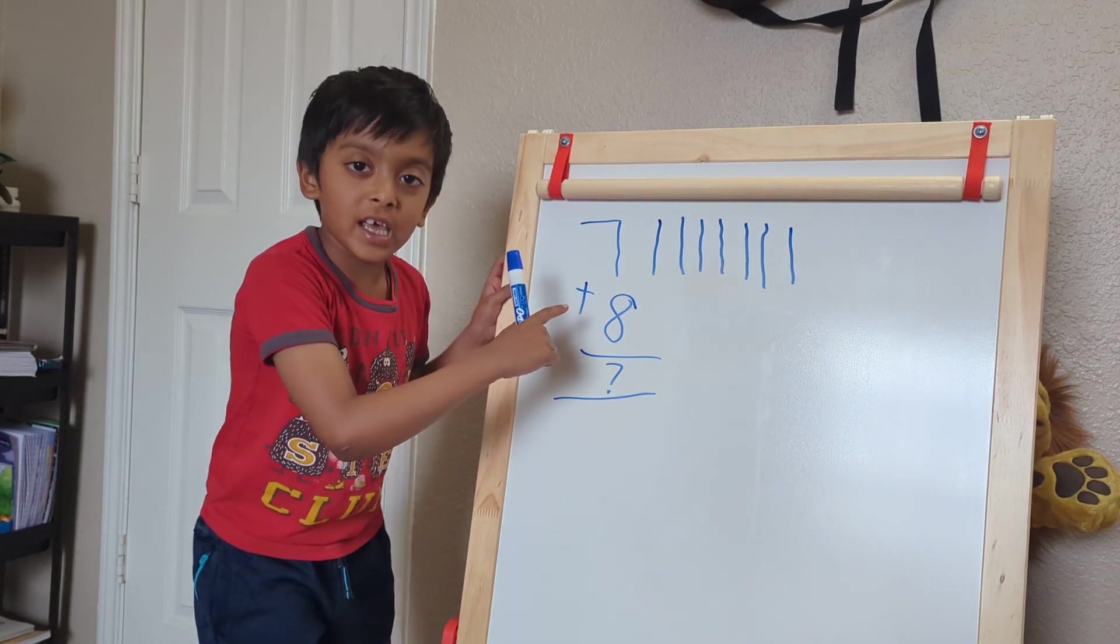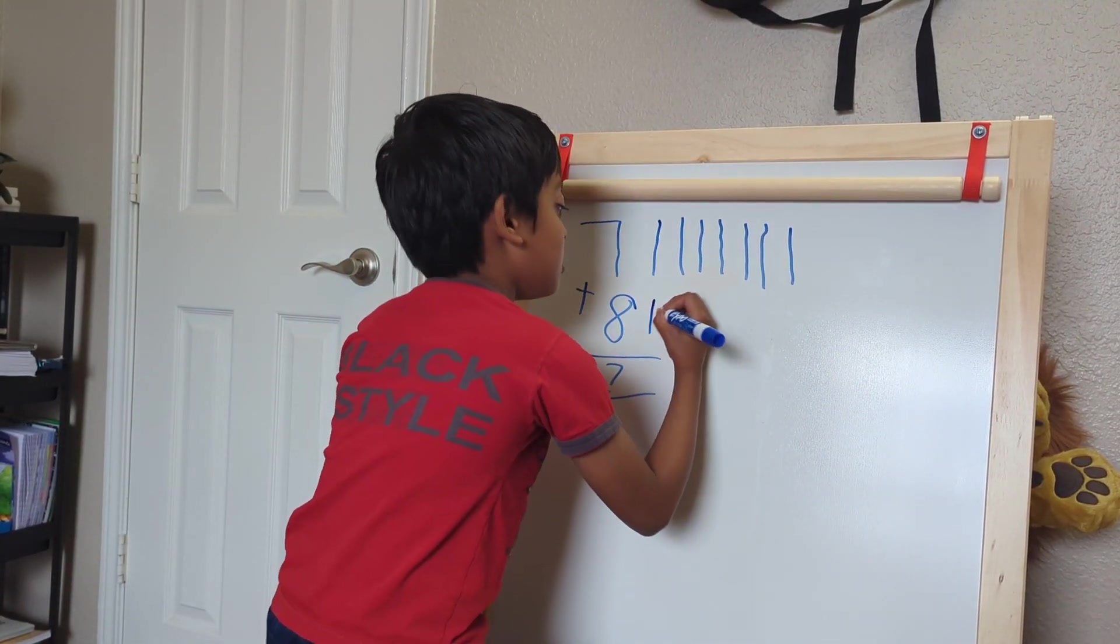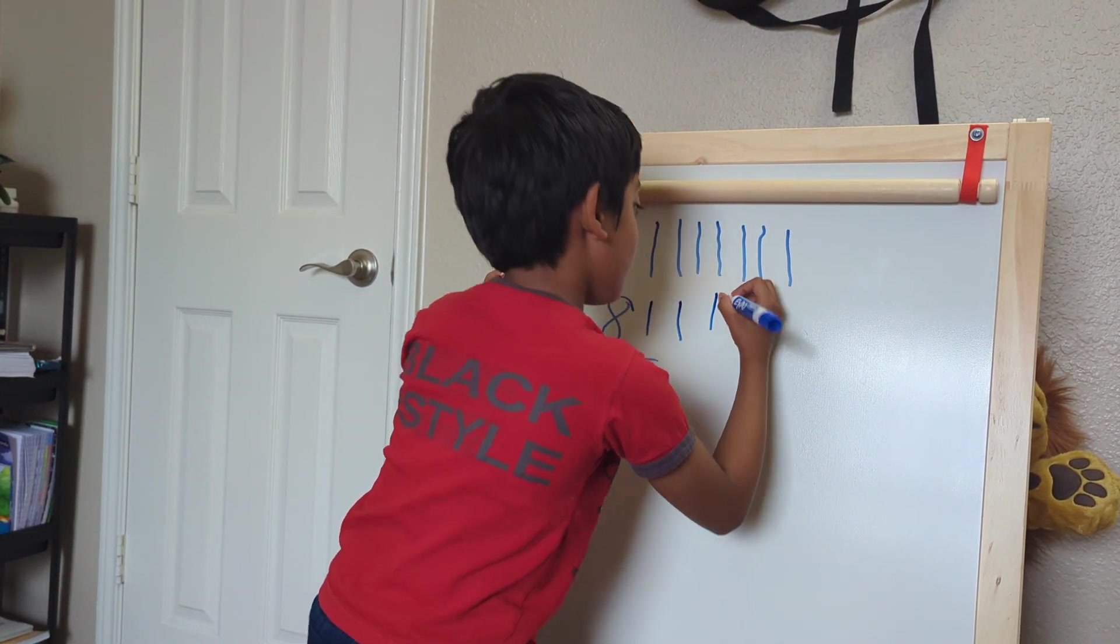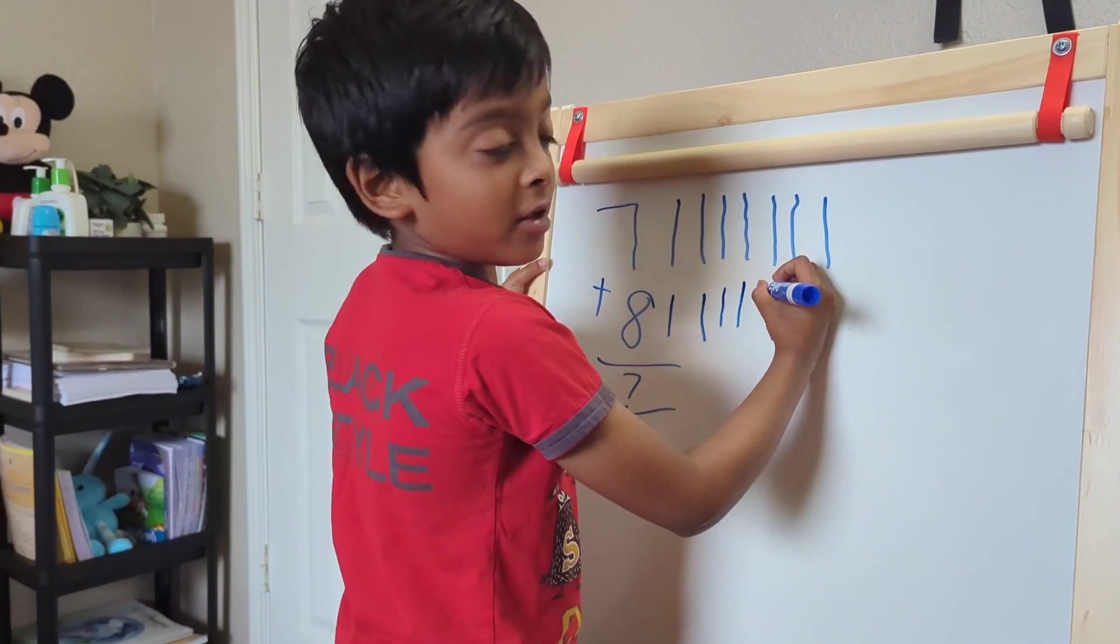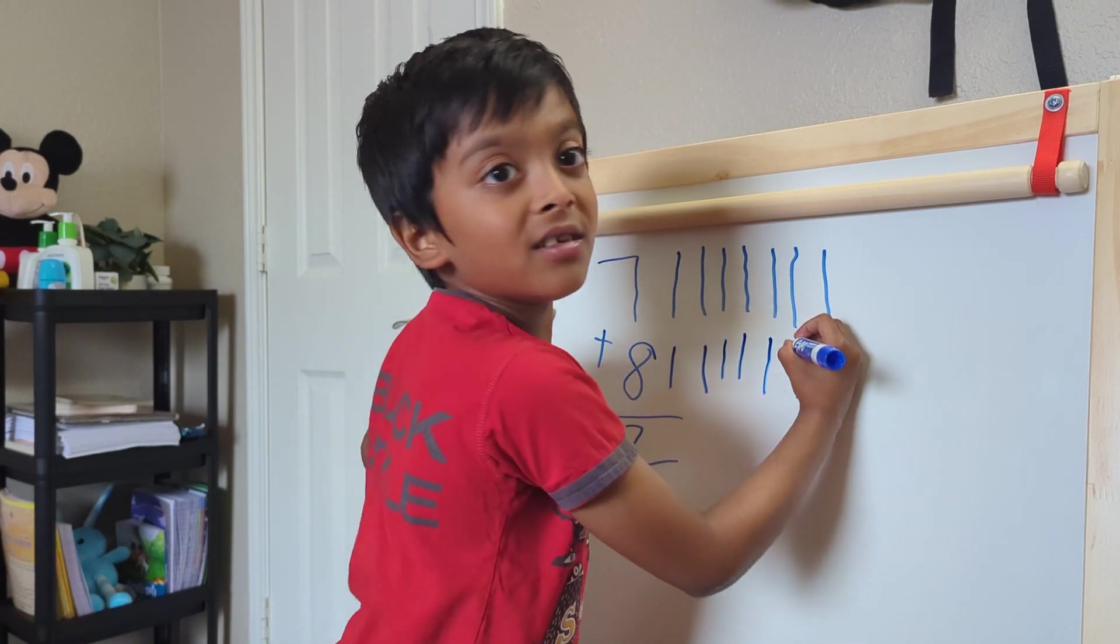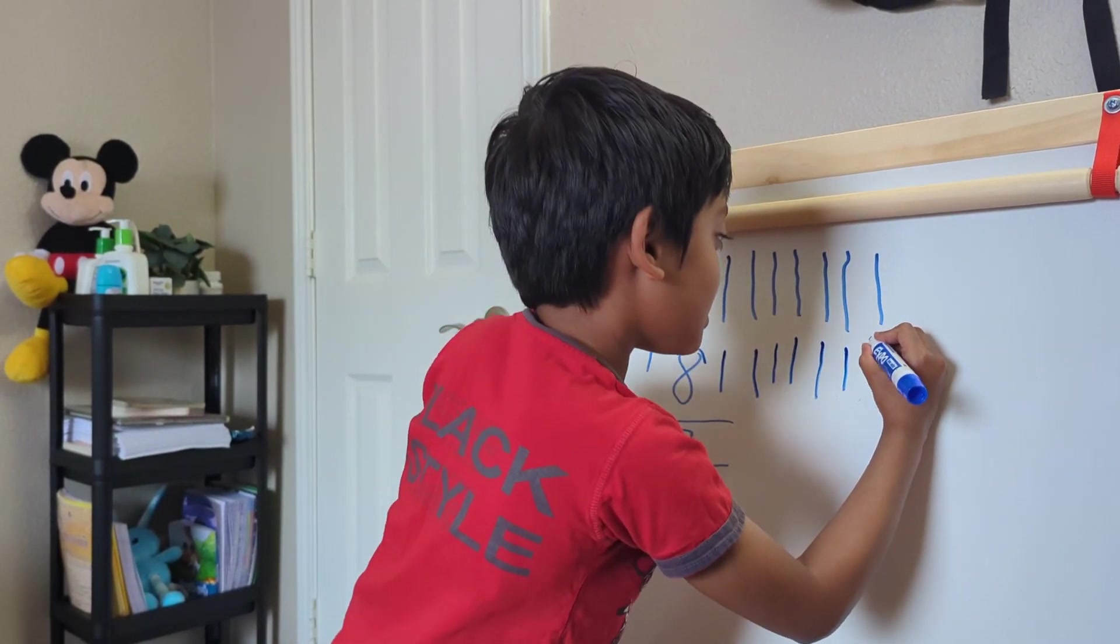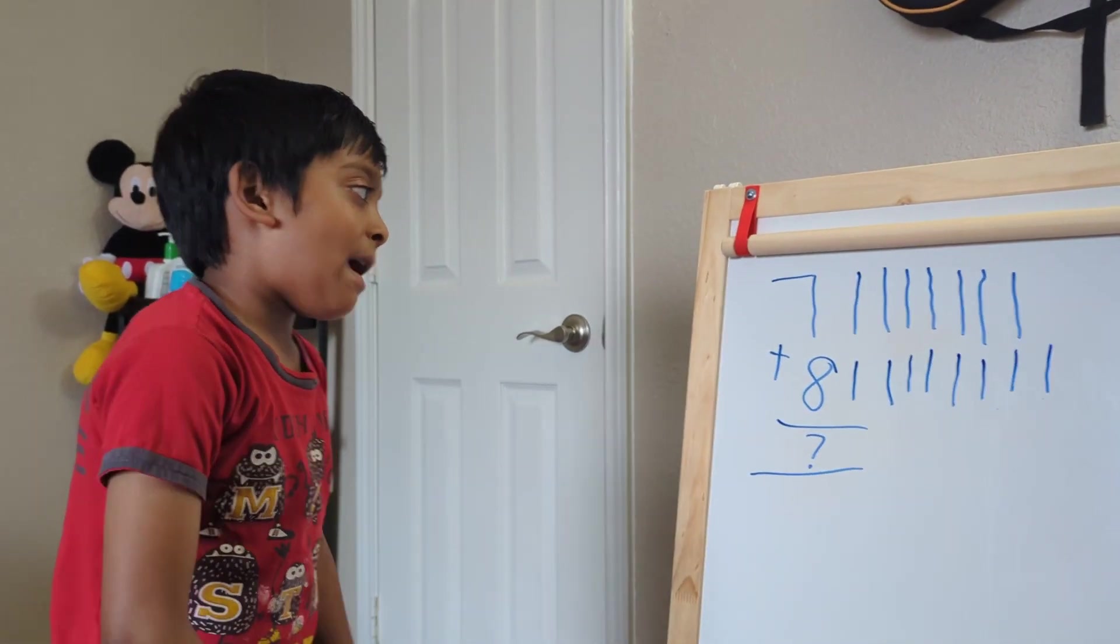And what number do you see here? It's 8. So let's write 8 lines. 1, 2, 3, 4, 5, 6, 7, 8. There. Now let's count them.